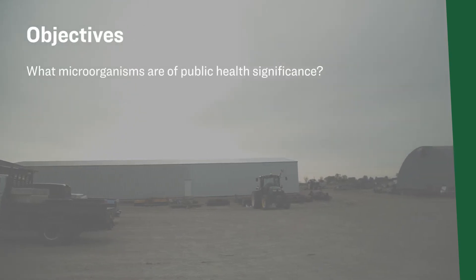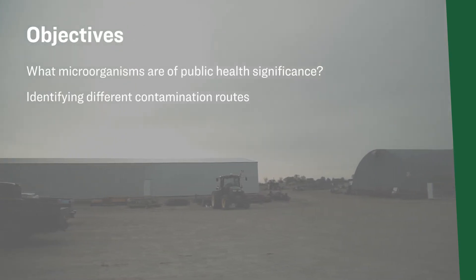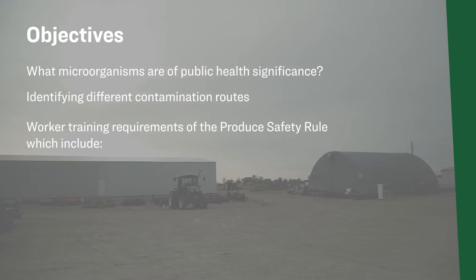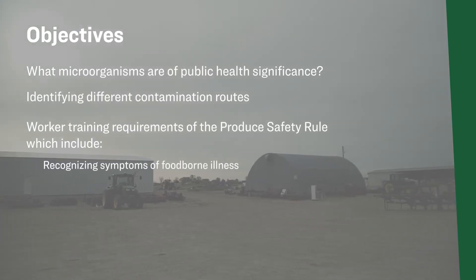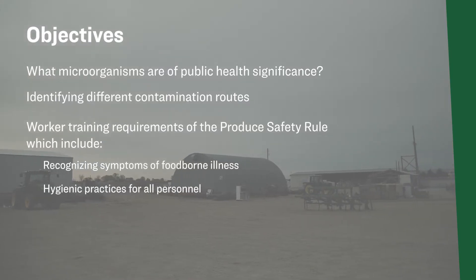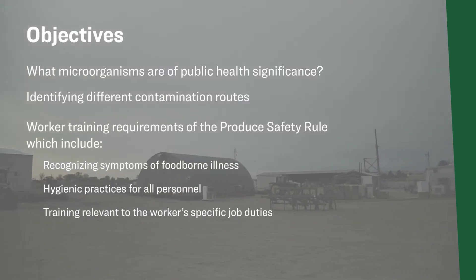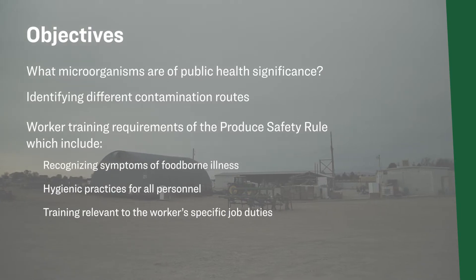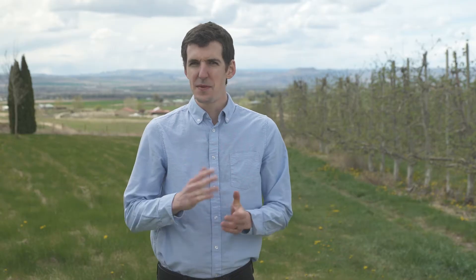In this video we'll cover the following objectives: what microorganisms are of public health significance, identifying different contamination routes, worker training requirements of the produce safety rule including recognizing symptoms of foodborne illness, hygienic practices for all personnel, training relevant to the worker's specific job duties, and visitor policies. There will be definitions of important terms included in on-screen graphics throughout this video, so feel free to pause the video at these times to review the definitions.